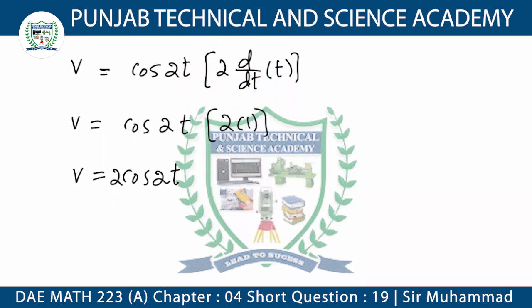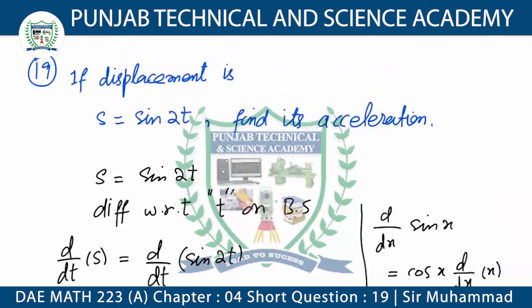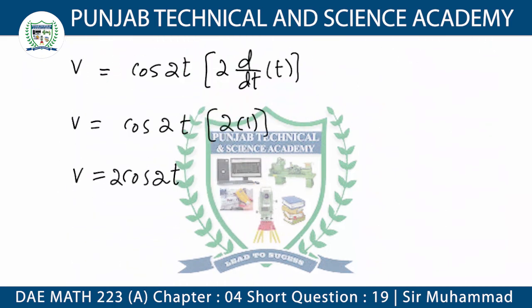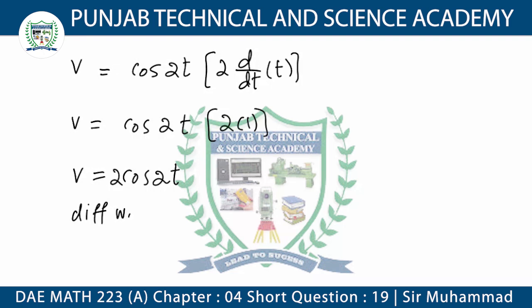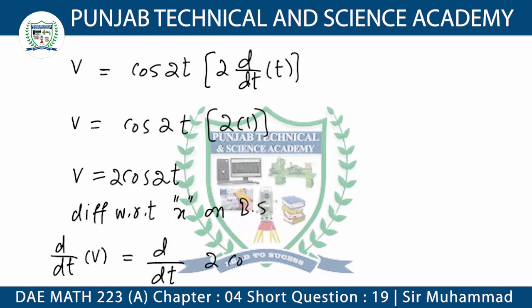We have seen in this question that we need acceleration. The derivative of displacement gives velocity, and when we take the derivative of velocity, it gives acceleration. So we differentiate with respect to t on both sides: d/dt of v is equal to d/dt of 2 cos 2t.